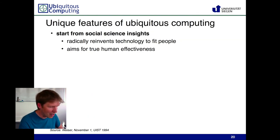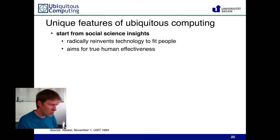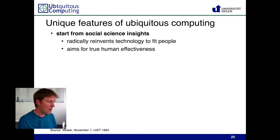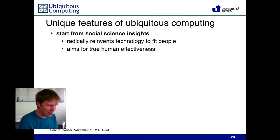The unique features of Ubiquitous Computing for Weiser were not really about the technology. The unique features were that you start with social science insights — he interacted a lot with social scientists and psychologists — and usually started with the demands for a particular computer system, only then talking to technologists. The driver was really social science, not computer science or engineering, which was booming at the time in the 90s.